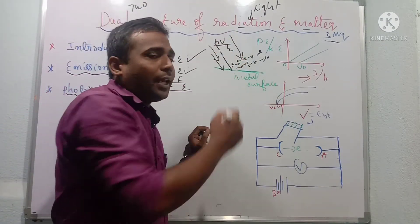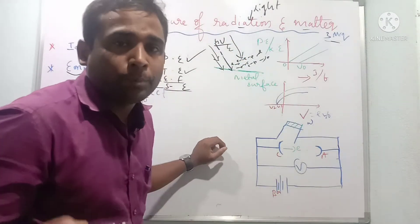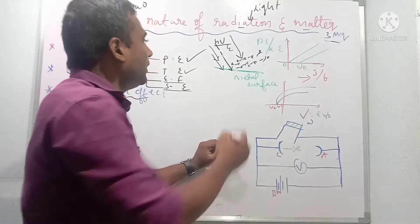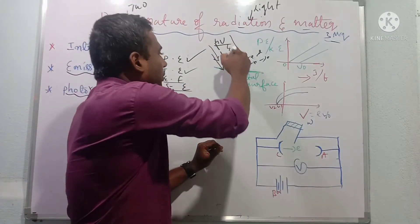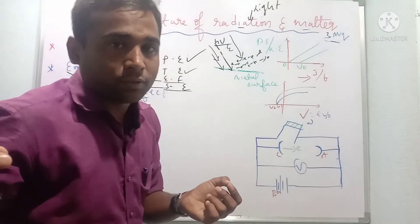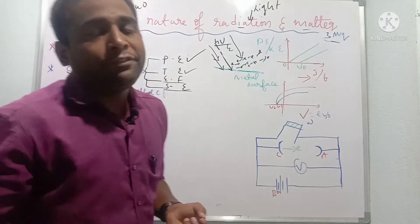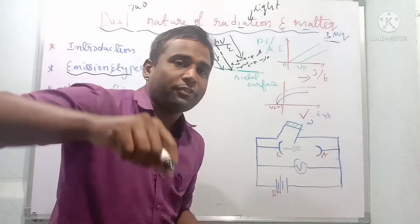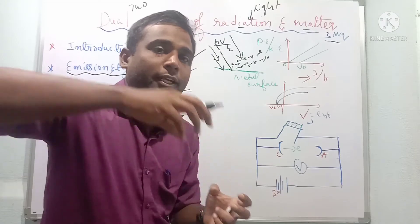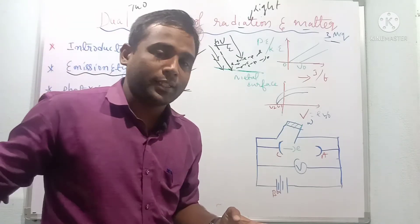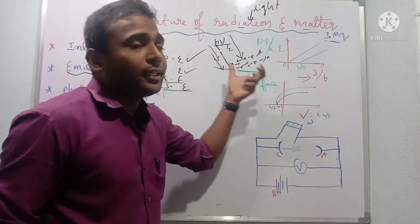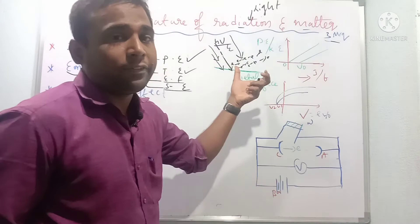Light is made up of photons — packets of energy. If one photon falls on one electron, it ejects one electron. If ten photons fall on electrons, ten photons will each eject one electron. This is the general principle of the photoelectric effect.